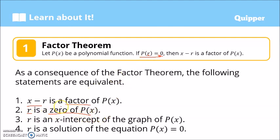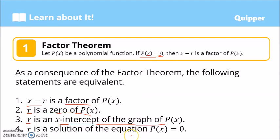If r is a zero of p of x, that also means r is an x-intercept of the graph of the polynomial function. When we say x-intercept, the graph of p of x crosses the x-axis at that particular value. For example, if r is 2, then 2 is also an x-intercept of the graph of p of x. Furthermore, r is a solution to the equation p of x equals 0 — meaning when you substitute the value of r into the polynomial function, it gives you 0.